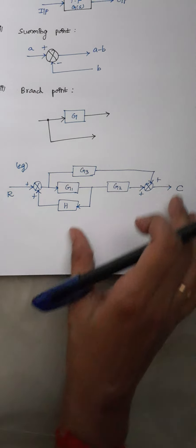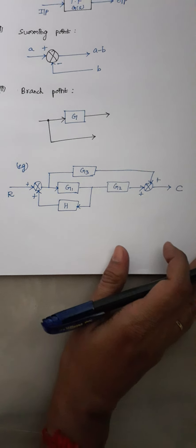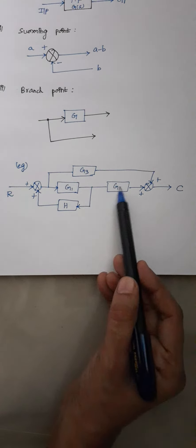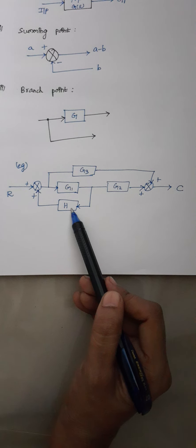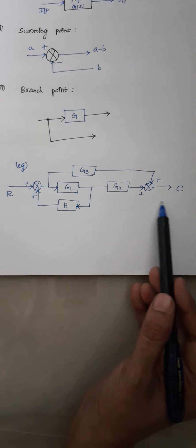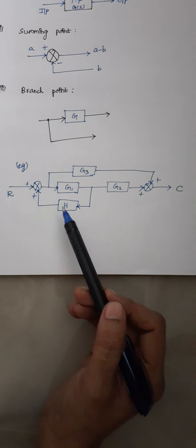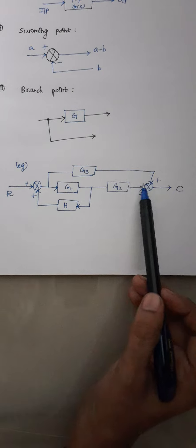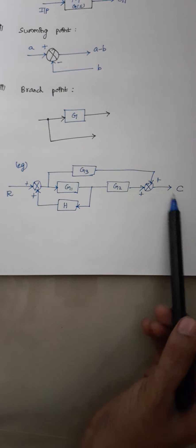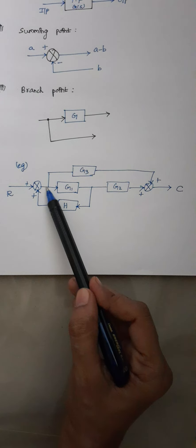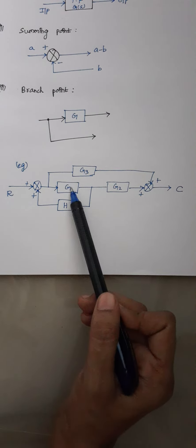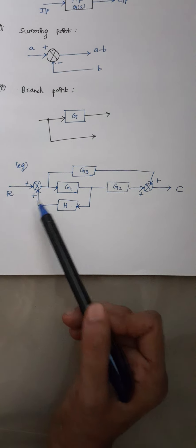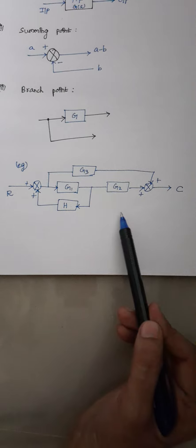This is the general example of a block diagram. Here, this system consists of four components, and those four components are represented by these four blocks. This block diagram tells the flow of signals — here the flow of signals are: this is your input signal R and this is your output signal C. In between, that is between your output and input, we are having various signals represented by arrowheads. That is, to each and every block we are having some input and some output. So this is the best example of a block diagram.